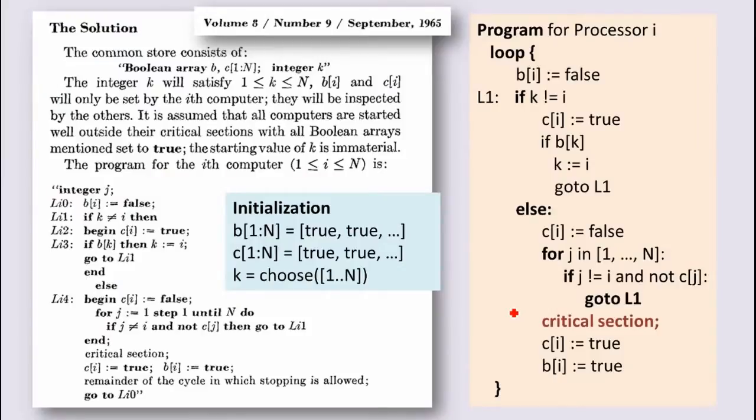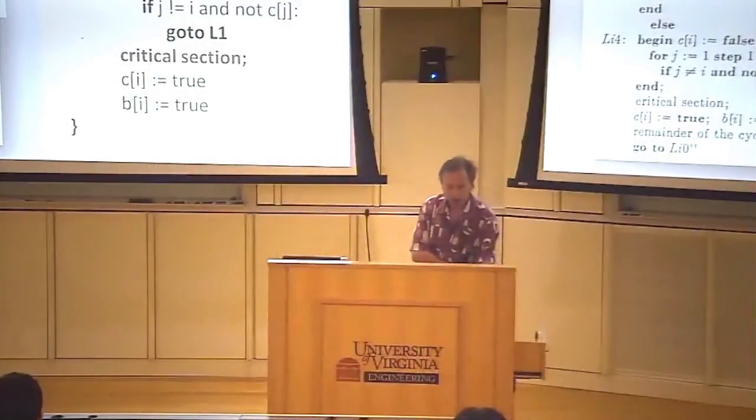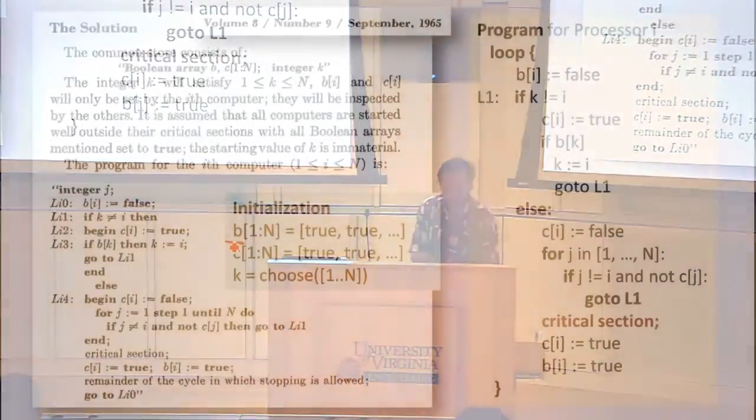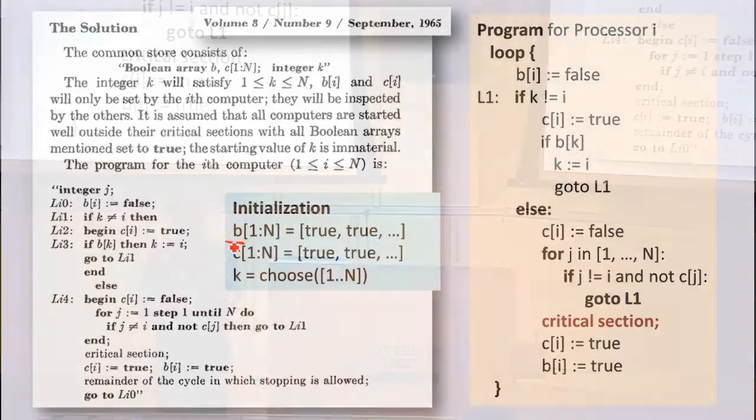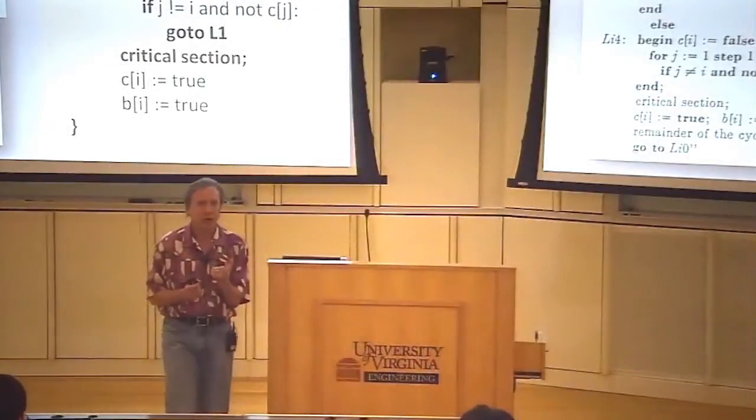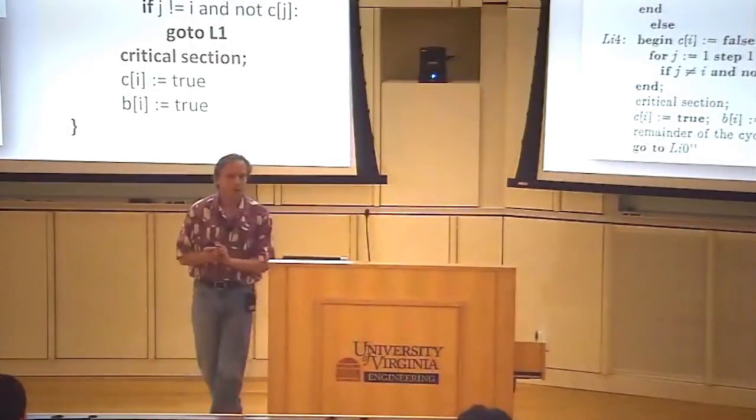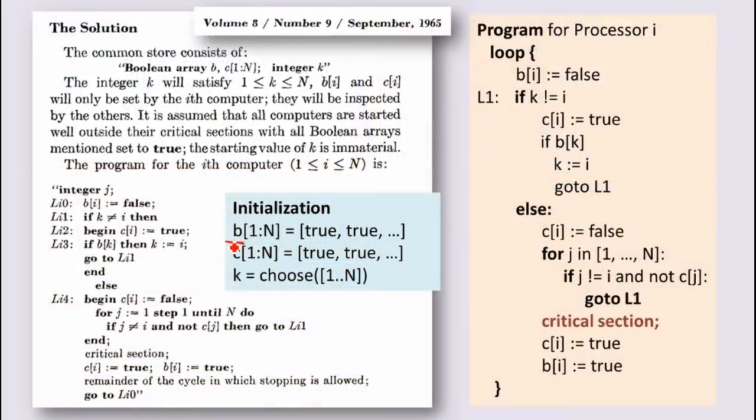You had some time to think about this code. What would be good names for B and C? Did anyone understand this code well enough to understand what those arrays should be called? So let's look at B first. So B initially is all trues. These arrays are indexed by the processor number. So value BI is only written to by processor I, but everyone can read them. The places where BI is written to are just here and here. What does BI mean?